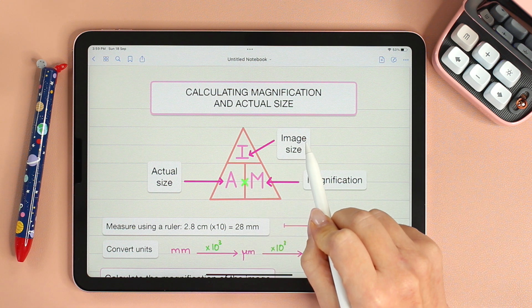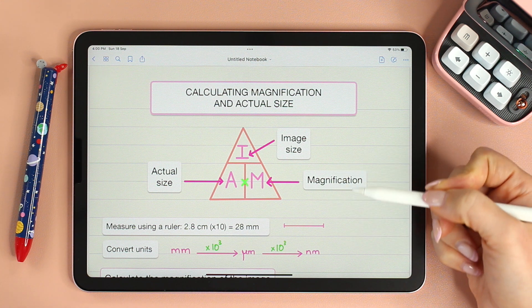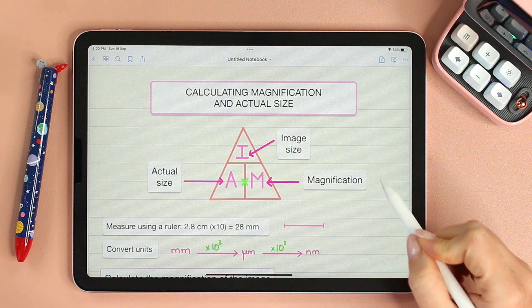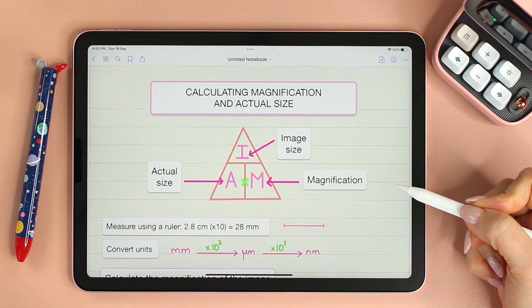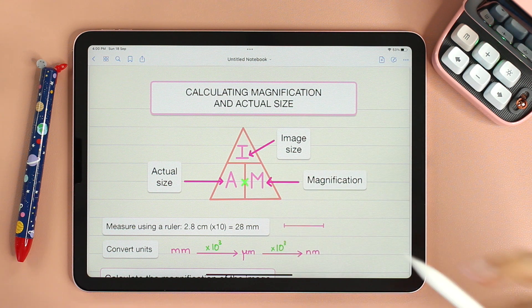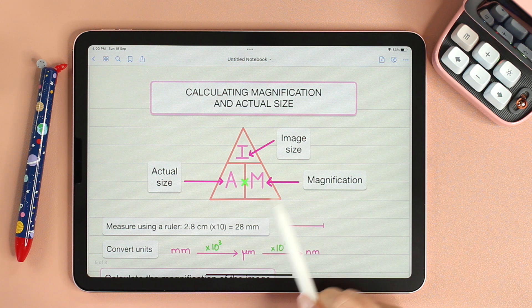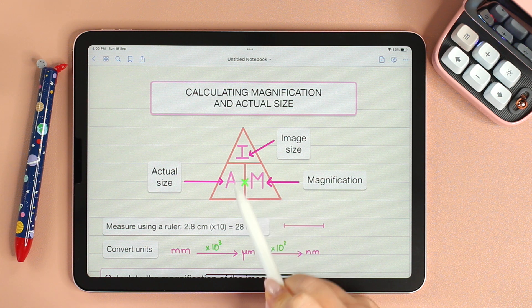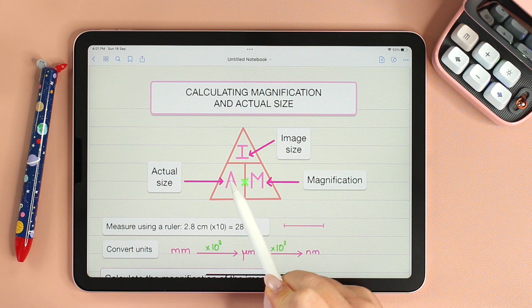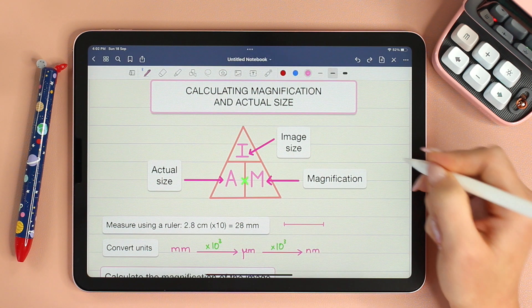I stands for the image size. Now you know that cells, whether they're eukaryotic or prokaryotic organelles, they're all microscopic. Their actual size A is in the range of micrometer or nanometer, but they are magnified M times for us to be able to see them as an image. So if an organism is magnified 100 times, you will see the image 100 times bigger.